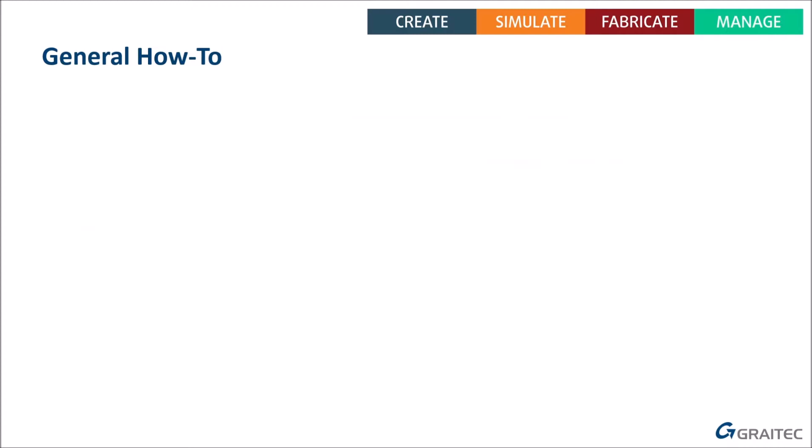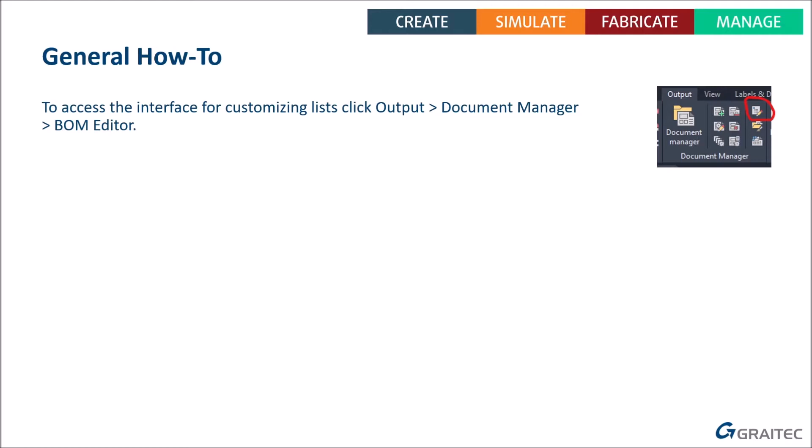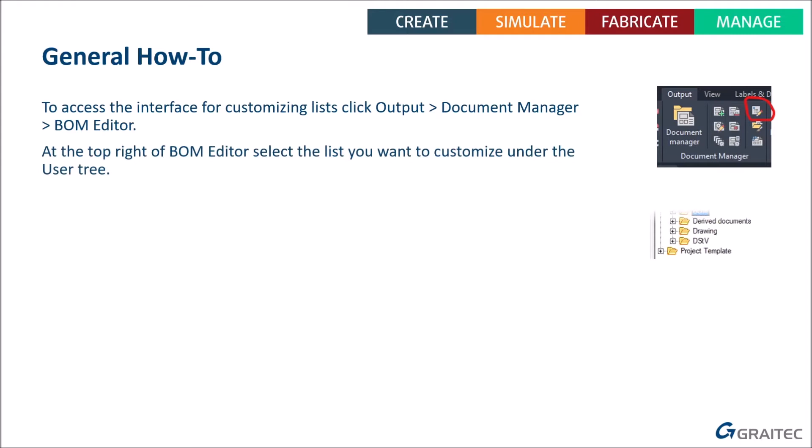So how do you customize your lists? First, go to the Output ribbon, Document Manager panel, and click on the BOM Editor icon. That will get you into the interface where you can customize your lists.